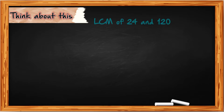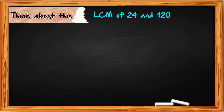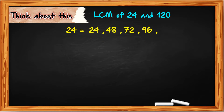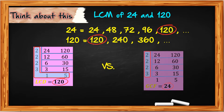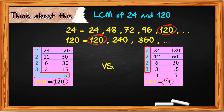Now let's have another given. What is the least common multiple of 24 and 120? For 24, we have 24, 48, 72, 96, 120, and so on. For 120, we have 120, 240, 360, and so on. As you notice, the least common multiple is 120. For larger numbers, we can use the Ladder method. For the LCD, we multiply the common divisors and also the relatively prime, so we get 120. For the greatest common factor, we only multiply the common divisors, so we have 24.